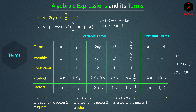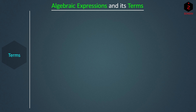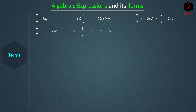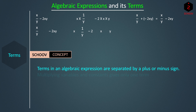We have given three names — coefficient, product, and factors — but don't worry about the names. You should simply know what an algebraic expression is. We can look at an algebraic expression as simply multiplication and addition. For example, in the expression X/Y − 2XY, X is multiplied by 1/Y; −2, X, and Y are multiplied; and then these two products are added to give X/Y + (−2XY) = X/Y − 2XY. This expression has two terms: X/Y and −2XY. Terms in an algebraic expression are separated by a plus or minus sign. Multiplying variables and constants gives only one term.